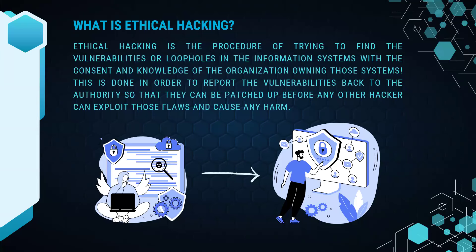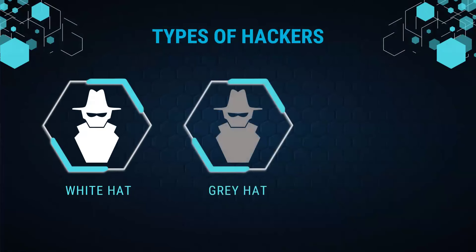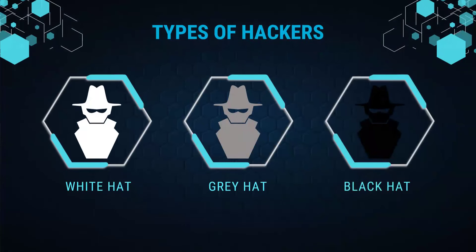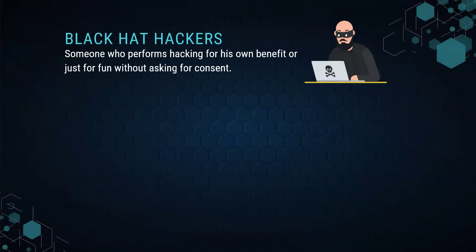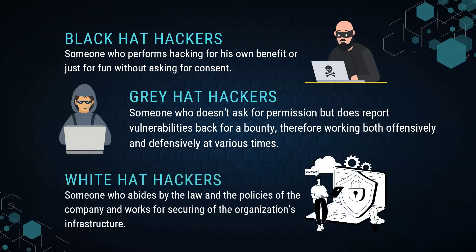Depending on these two definitions of hacking and ethical hacking, we can categorize the types of hackers. There are three main categories: white hat hackers, gray hat hackers, and black hat hackers. Black hat hackers perform hacking for their own benefit or just for fun, without asking for consent. They can commonly be called cyber criminals — people who perform cyber threats, steal data, or destroy data.